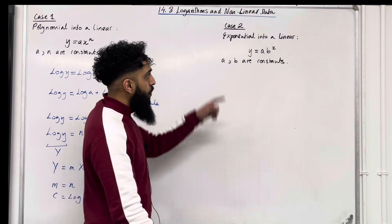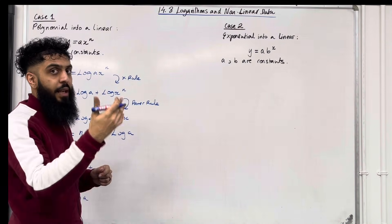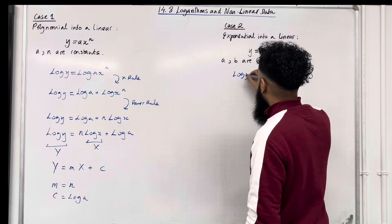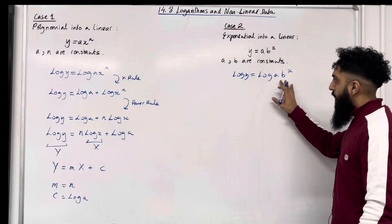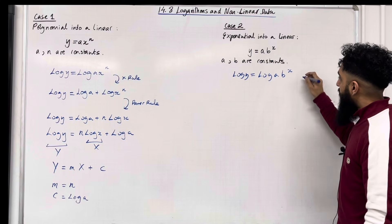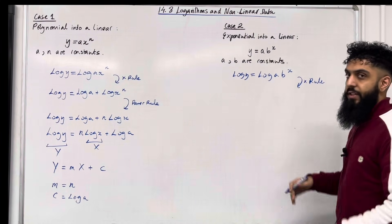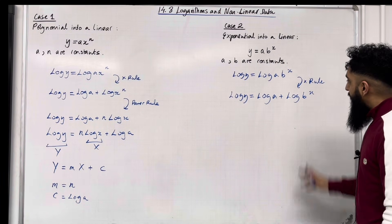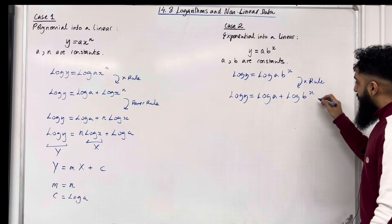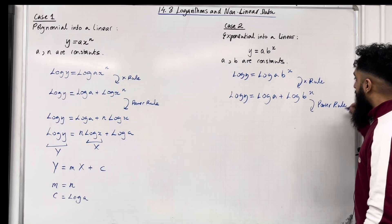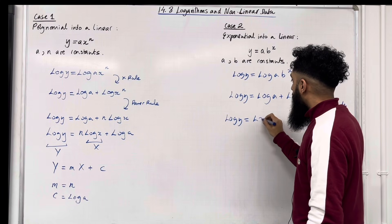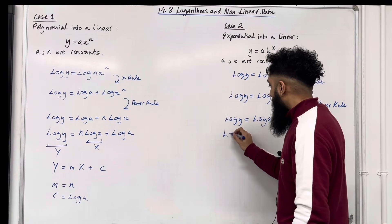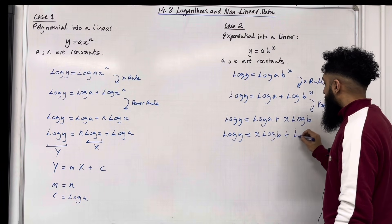Now let's look at case 2. We take the exponential function y equals ab to the power x, where a and b are constants, and transform it into a linear. Applying logs on both sides: log y equals log(ab to the power x). Using the multiplication rule: log y equals log a plus log(b to the power x). Then using the power rule to bring down the power: log y equals log a plus x log b. Rewriting: log y equals x log b plus log a.